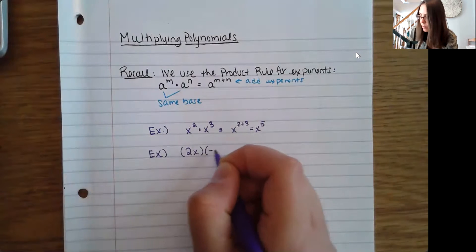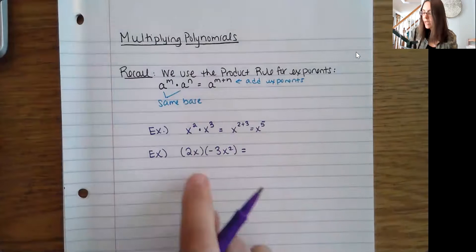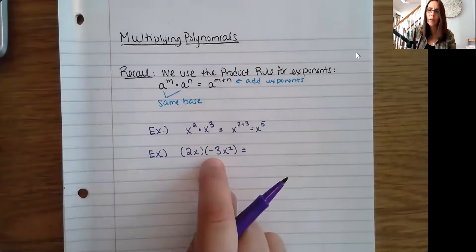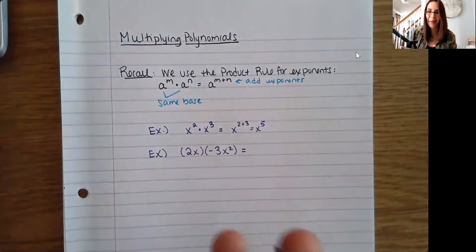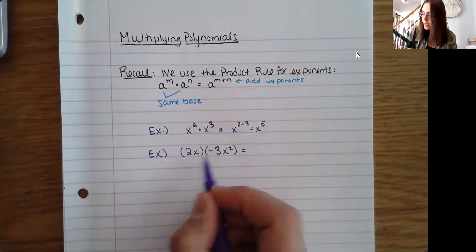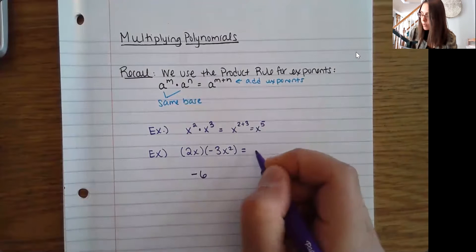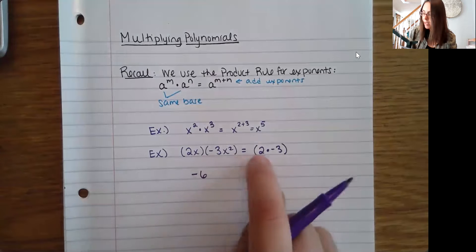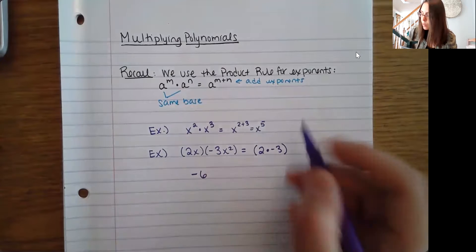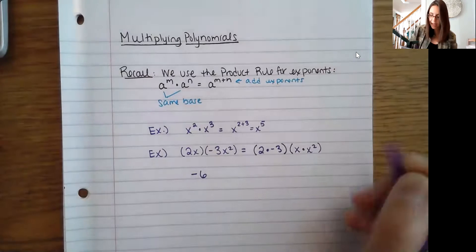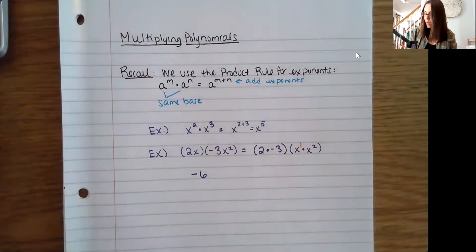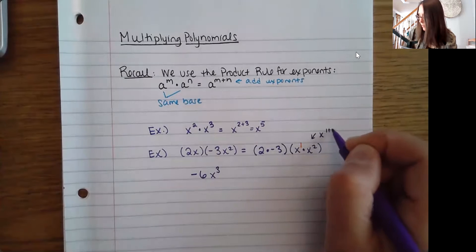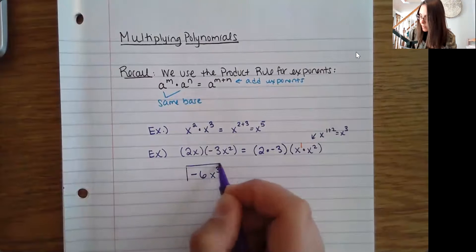Let's say I have 2x times negative 3x squared. When I have numbers out front, these are different bases — I have a 2 and a negative 3, and they don't have exponents — so you just multiply them like regular numbers: 2 times negative 3 is negative 6. Then my x's are the same base, so I have x times x squared. Don't forget if there's no exponent, there is a 1 there, so I have 1 plus 2 which gives me 3. My final answer is negative 6x cubed.